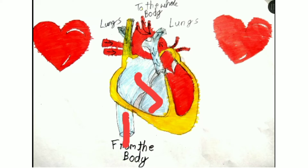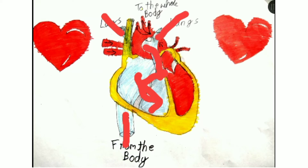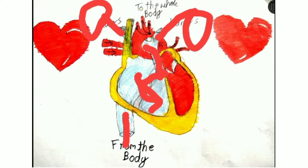This valve ensures that the deoxygenated blood can go up but not down. So this goes up and then through this pipe into the lungs. You can see the lungs. Here are the lungs.